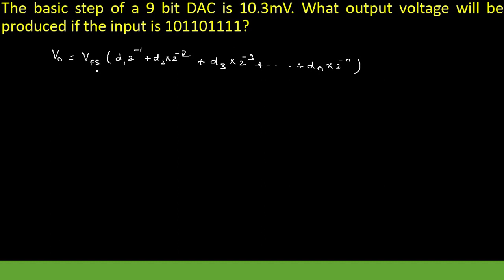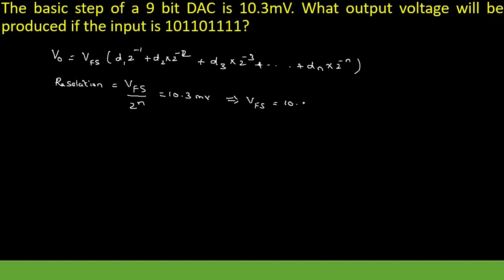But the full scale output voltage is not directly given to us. The data available to us is the basic step of a 9-bit DAC. Basic step means resolution. That value of resolution is given to us. Resolution, that is the basic step, equals VFS divided by 2 power n. This is equal to 10.3 millivolt. So, VFS is equal to 10.3 millivolt times 2 power n. For this question, n is equal to 9, so VFS is equal to 10.3 millivolt times 2 power 9.